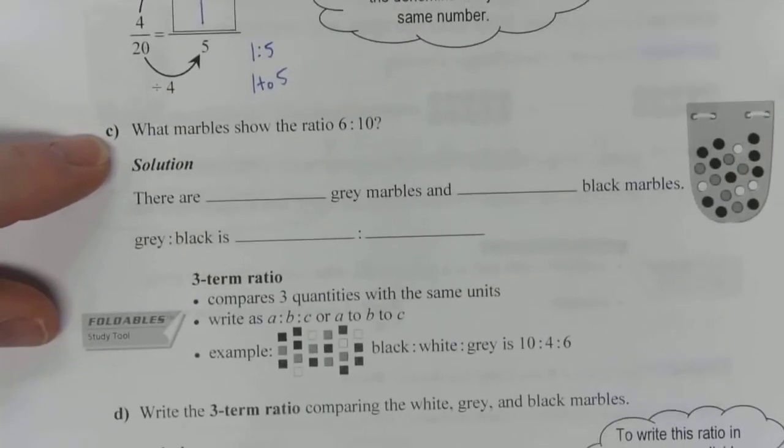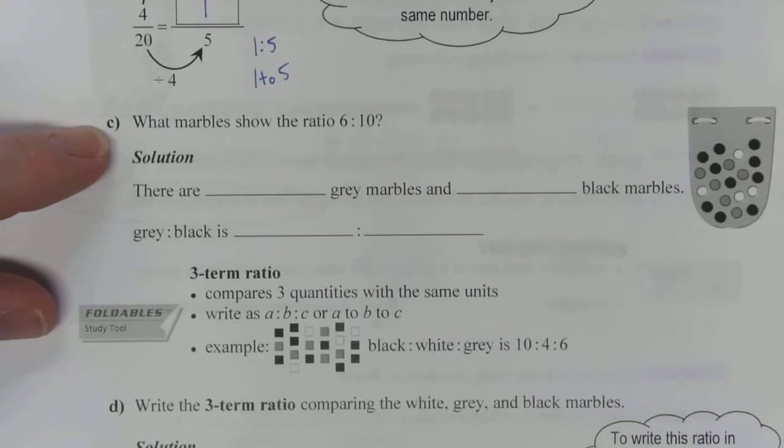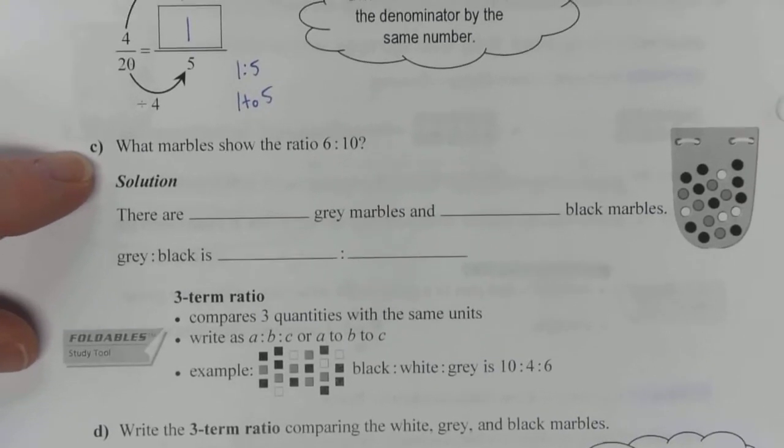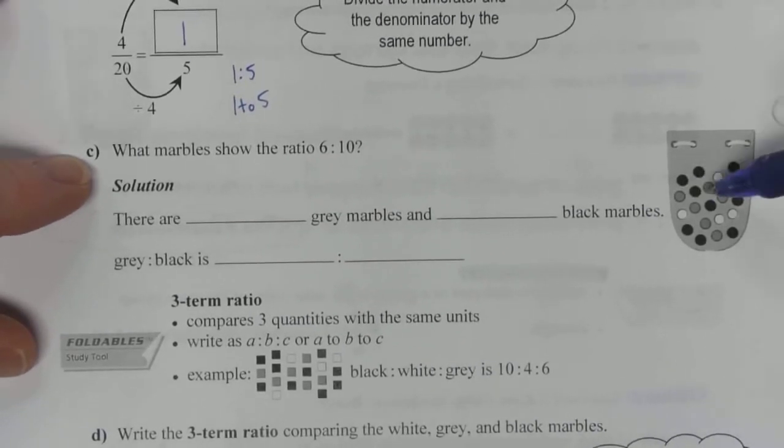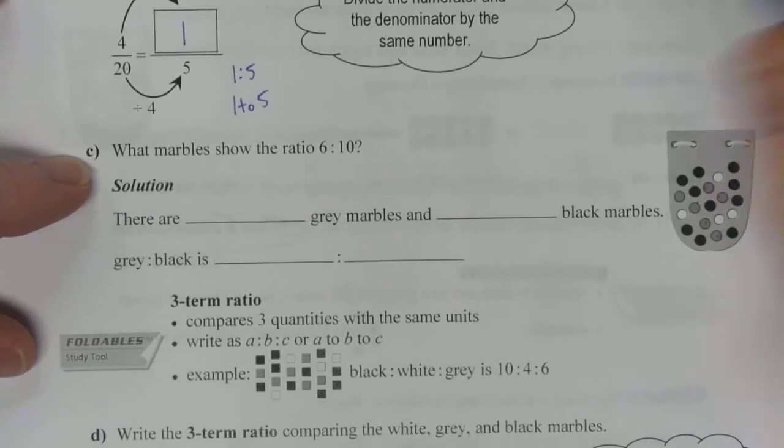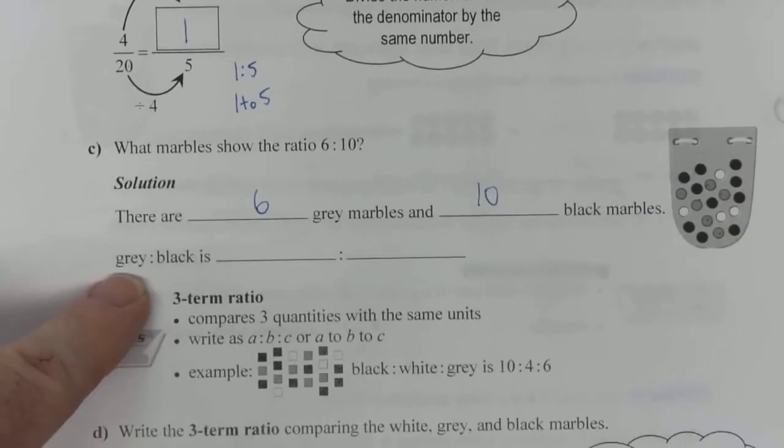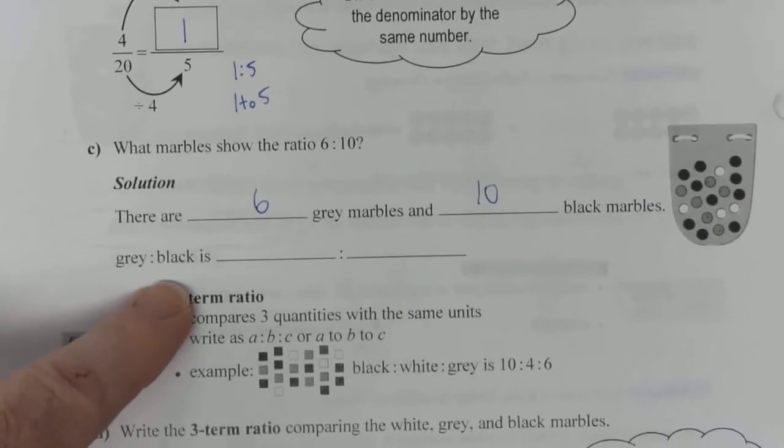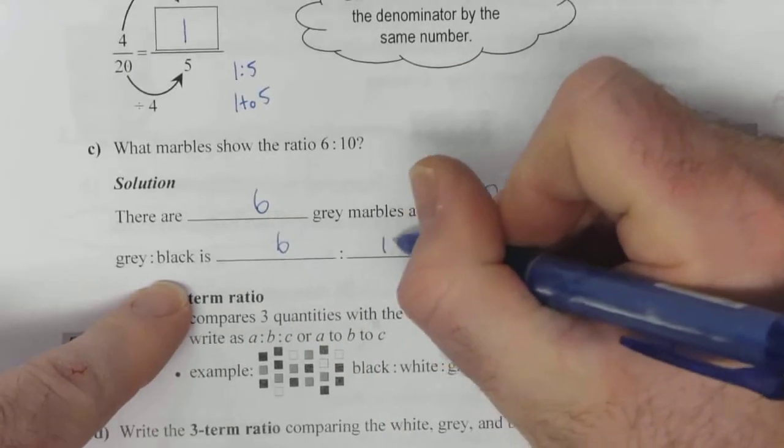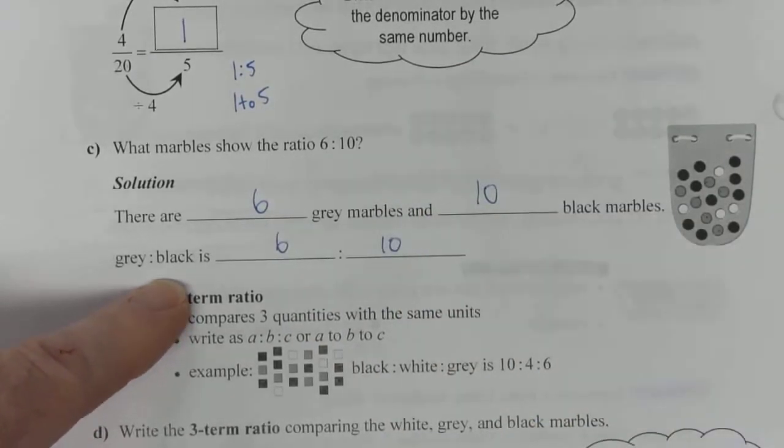Part C. What marbles show the ratio of 6 to 10? Well, let's have a look. There's 1, 2, 3, 4, 5. There are 6 grey marbles. And 10, 1, 2, 3, 4, 5, 6, 7, 8, 9, 10. There are 10 black marbles. So, therefore, the ratio of grey to black is going to be 6 to 10. That's another part-to-part ratio.